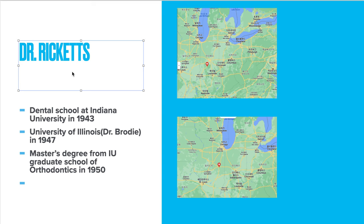Ricketts graduated from dental school at Indiana University in 1943. He went to University of Illinois under Dr. Brody in 1947 to study orthodontics. Dr. Brody was a student of Angle, who is the father of modern orthodontics. Dr. Ricketts got his master's degree from University of Illinois Graduate School of Orthodontics in 1950. Dr. Brody was chief of orthodontics.